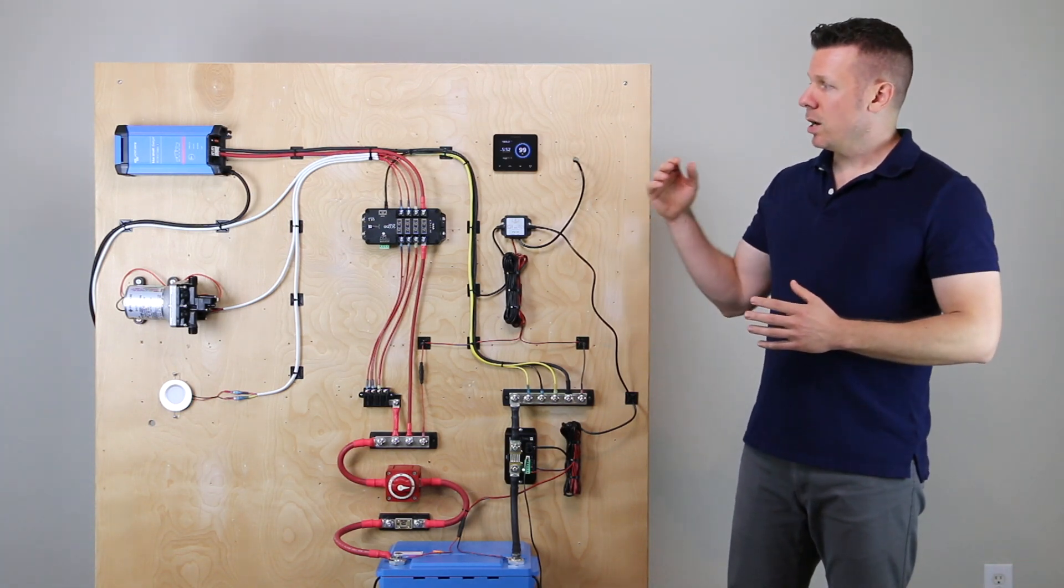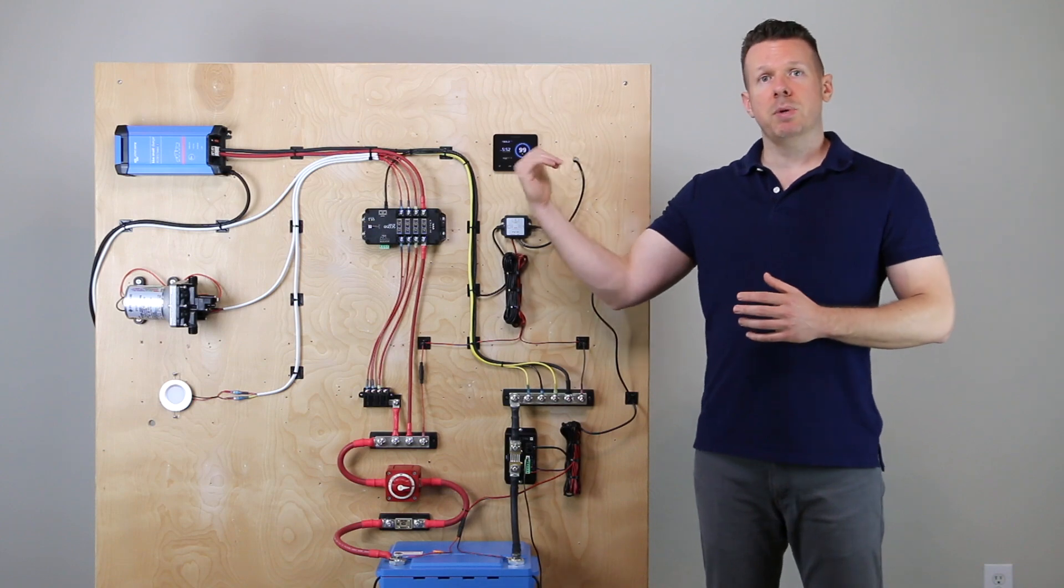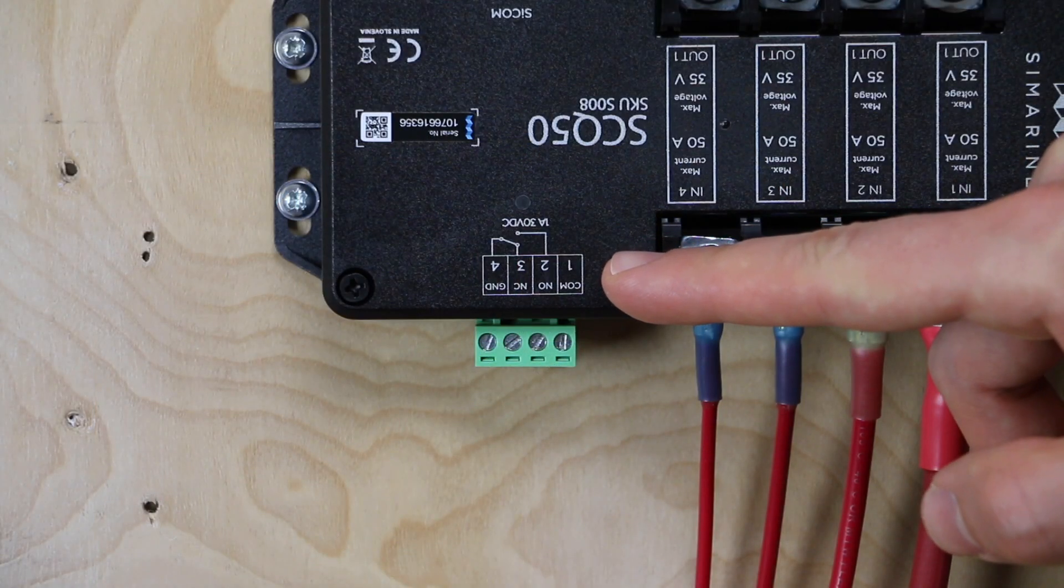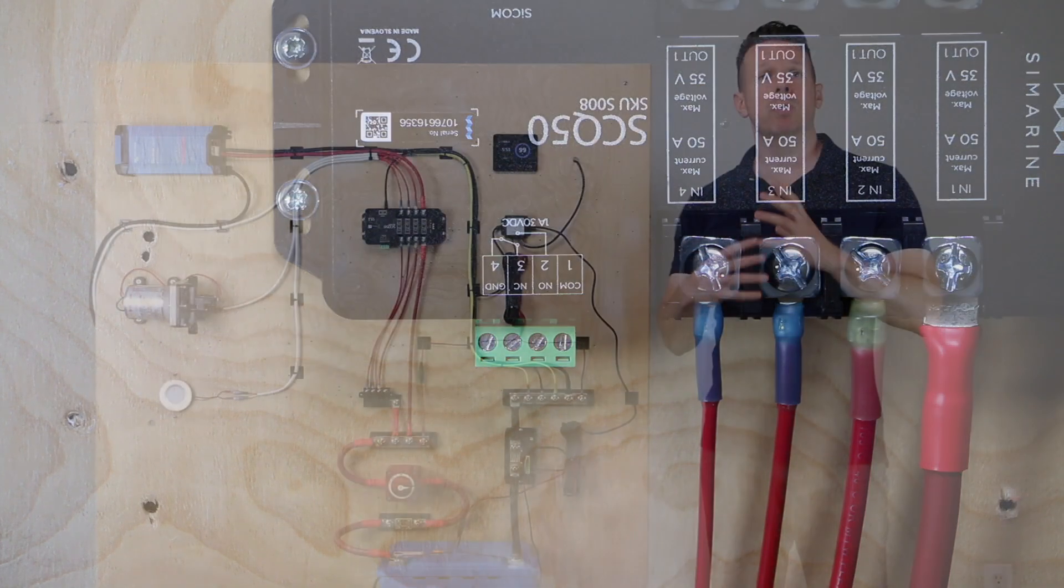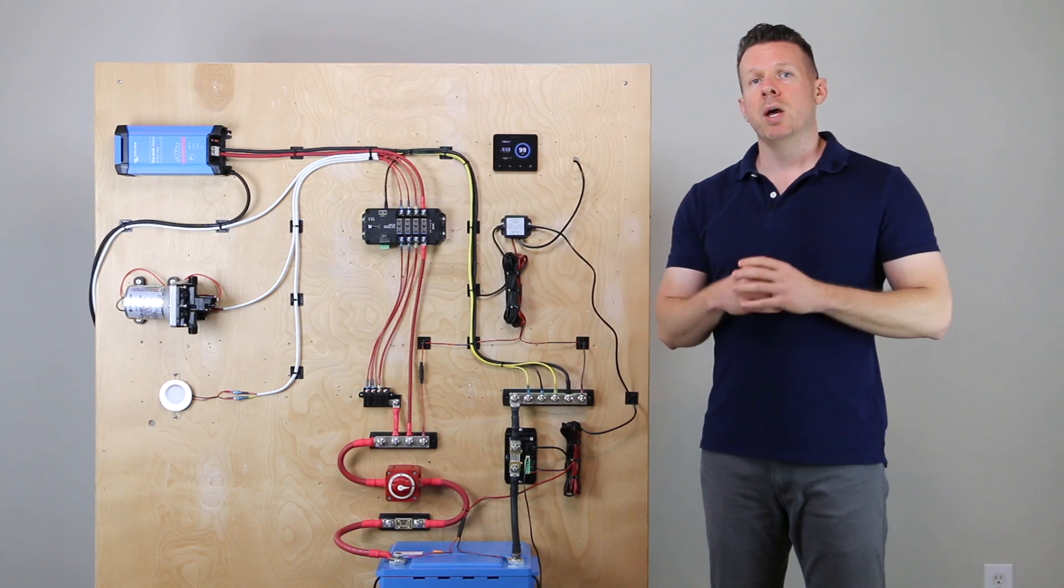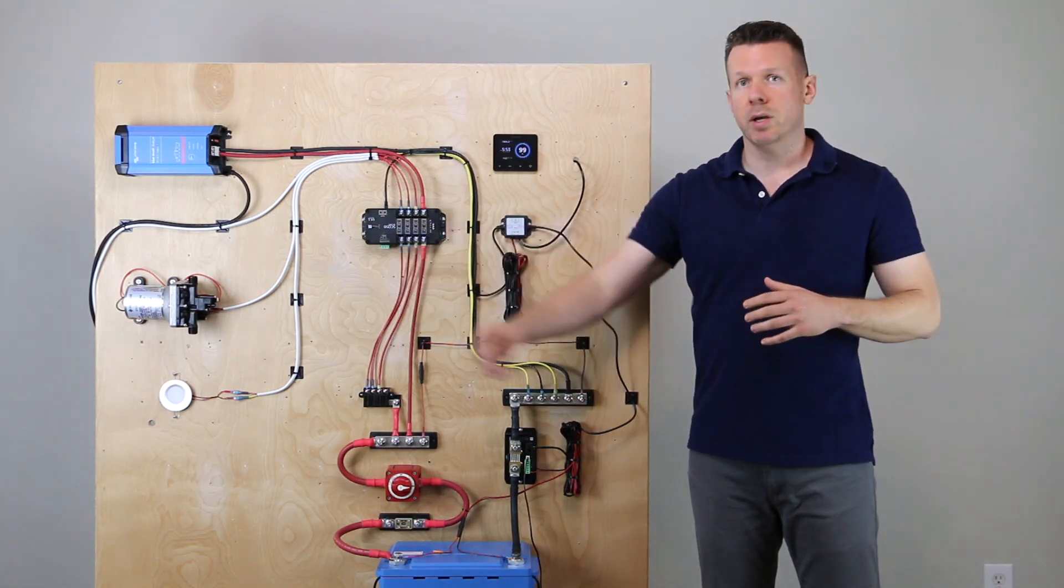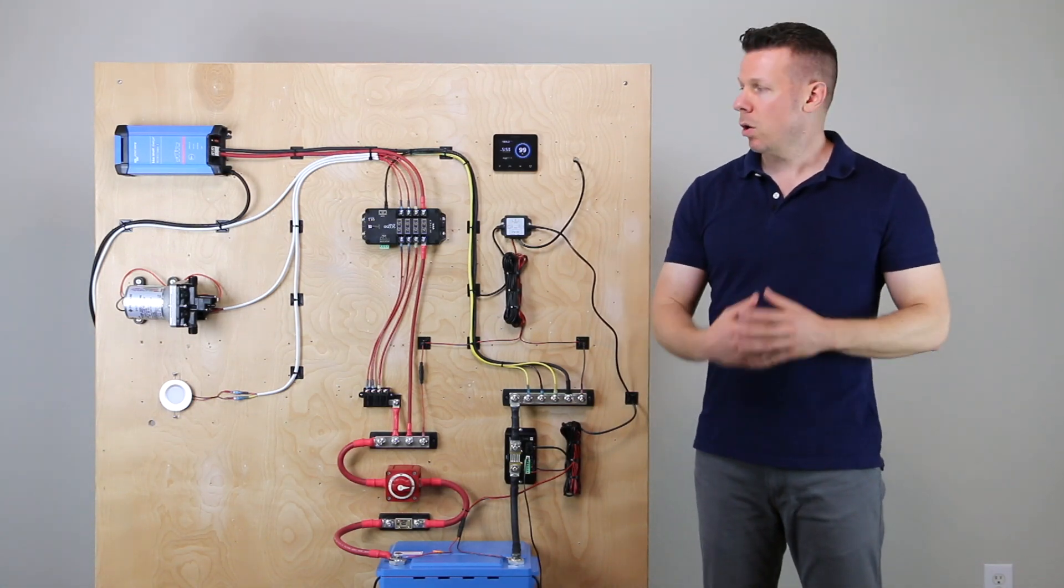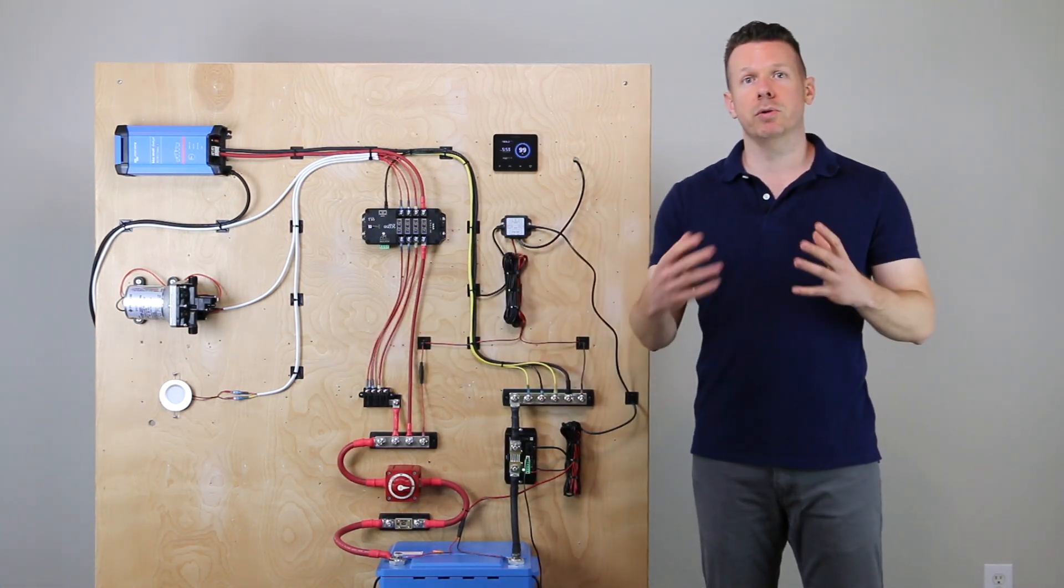Now in part three, we're going to be setting up an alarm on the Pico. We're going to be setting off an alarm relay here on the quadro shunt.